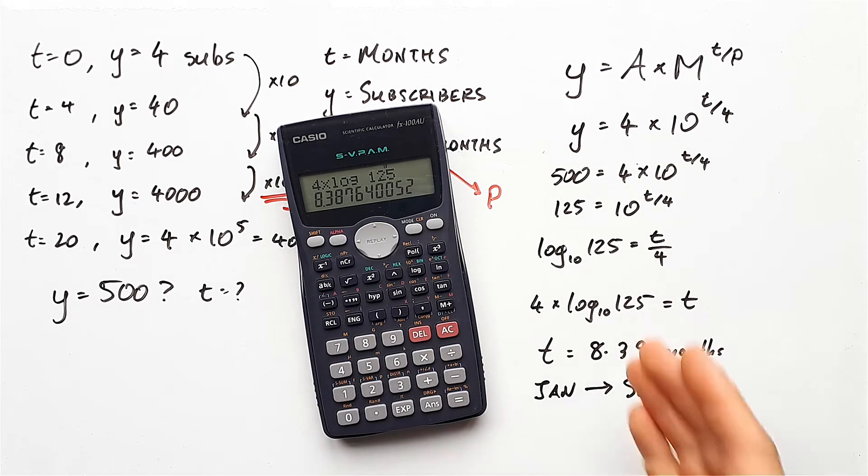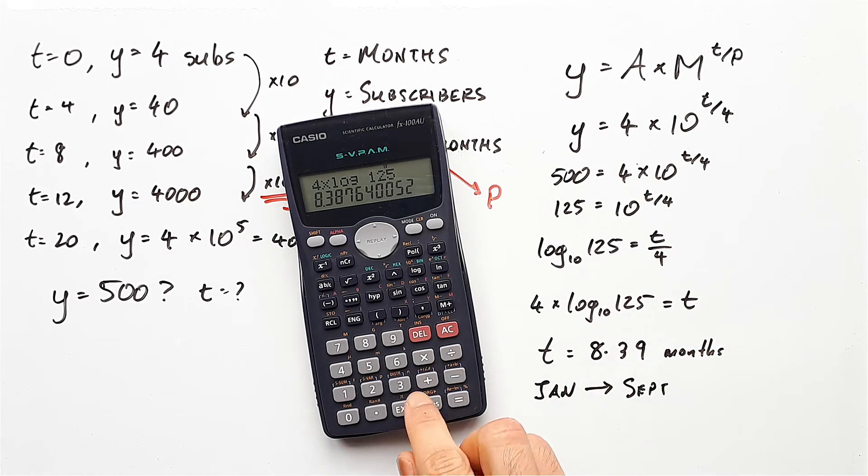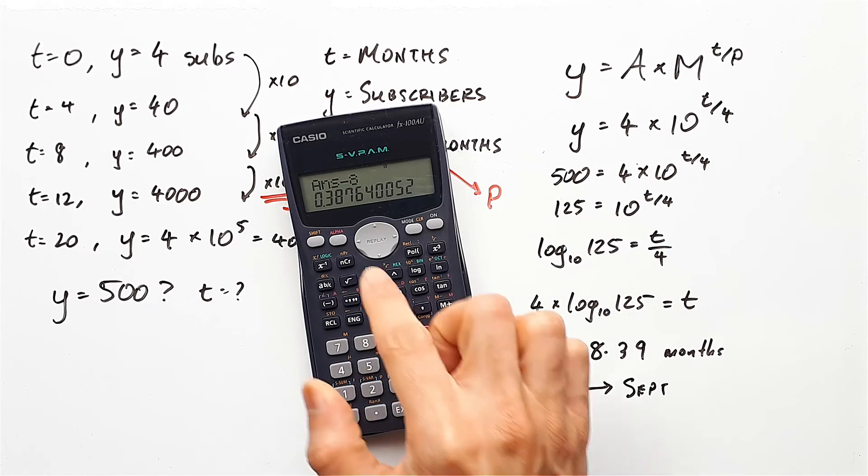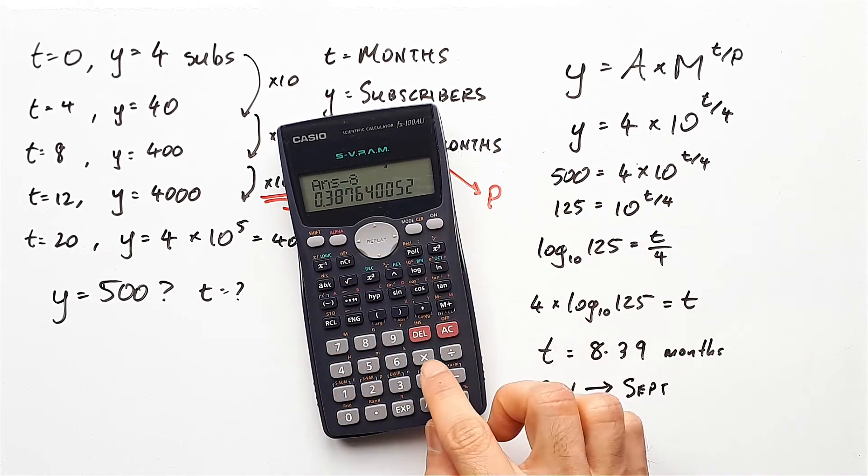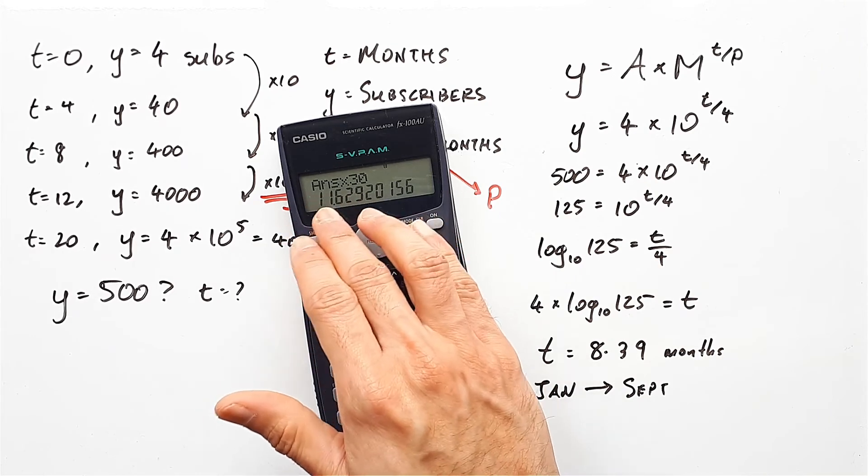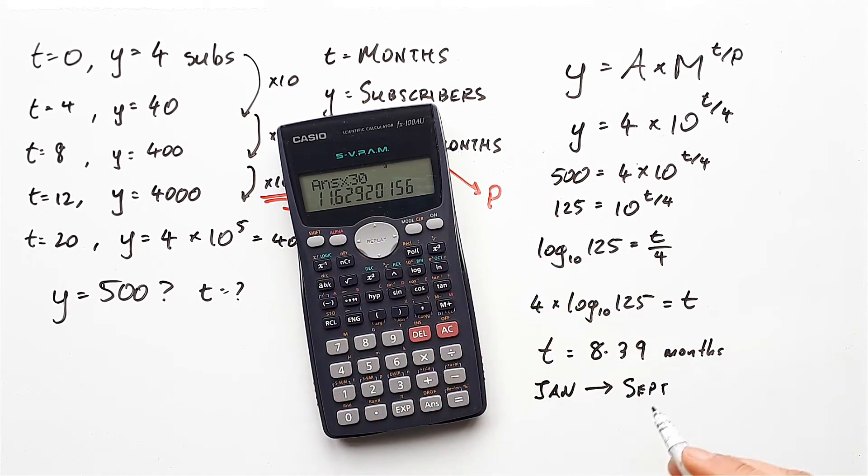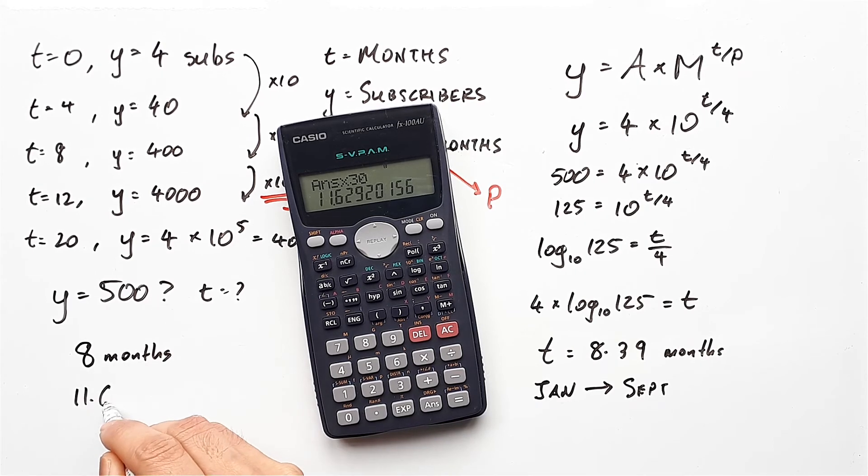If they ask for the nearest day, and let's say we presume every month is 30 days, then you minus 8 giving us 0.38 times by 30. And so we have 11.6 days. So another way to say this is 8 months and 11.6 days.